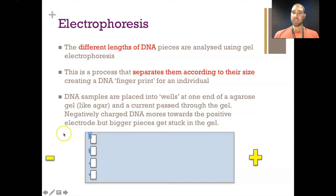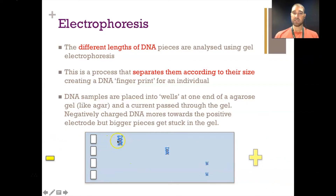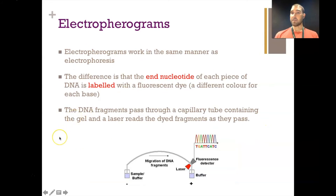Bigger pieces of DNA have a harder time making their way through the gel, so they don't travel as far, whereas smaller pieces go further. So our large piece of DNA doesn't go as far, and our smaller pieces of DNA go a lot further. This is how we separate out pieces of DNA on an electrophoresis gel. This was the height of technology when I was in high school, but now we have better, faster technology — electropherograms. Same idea.